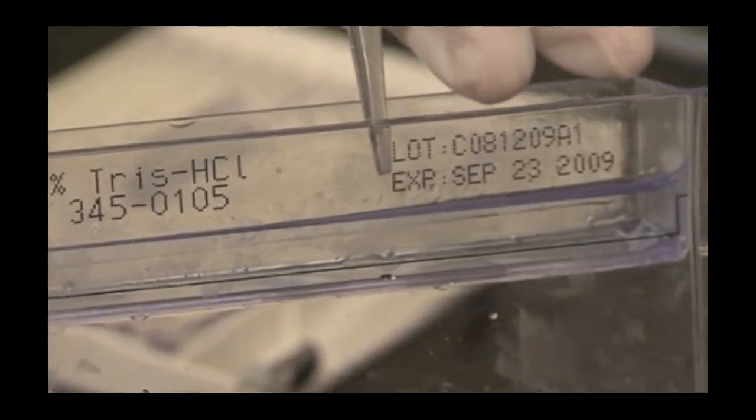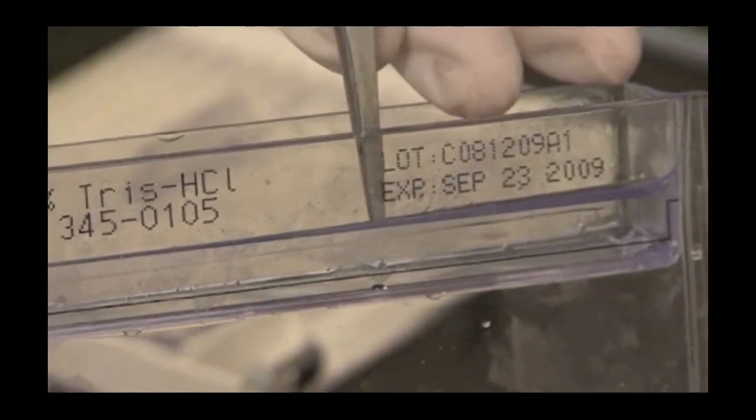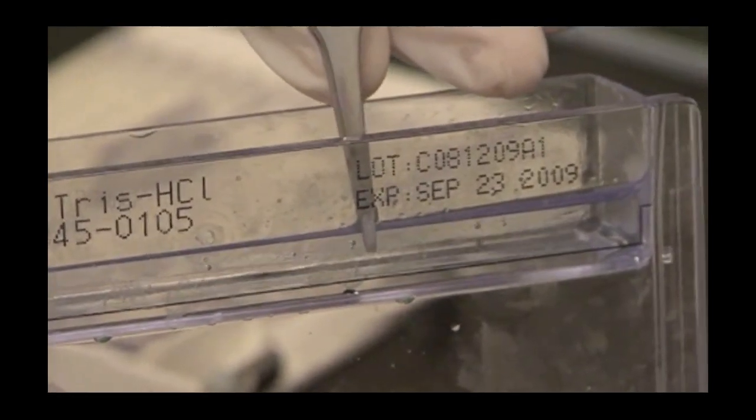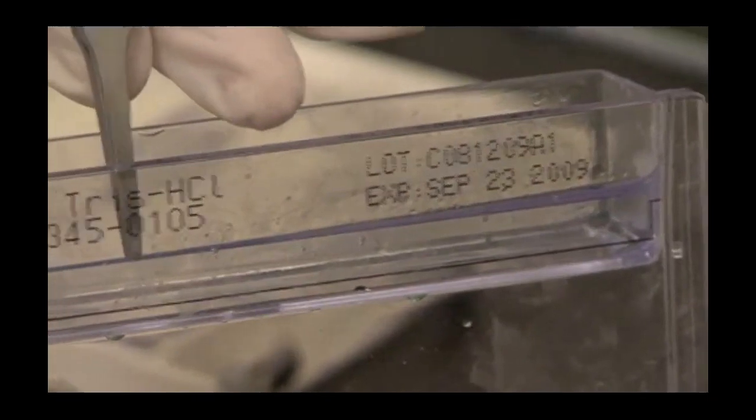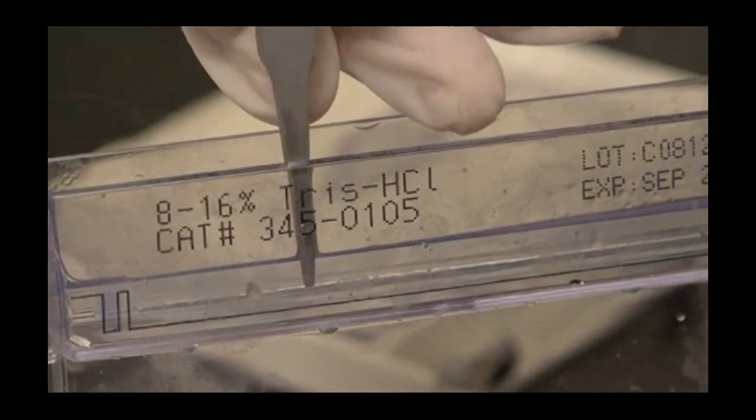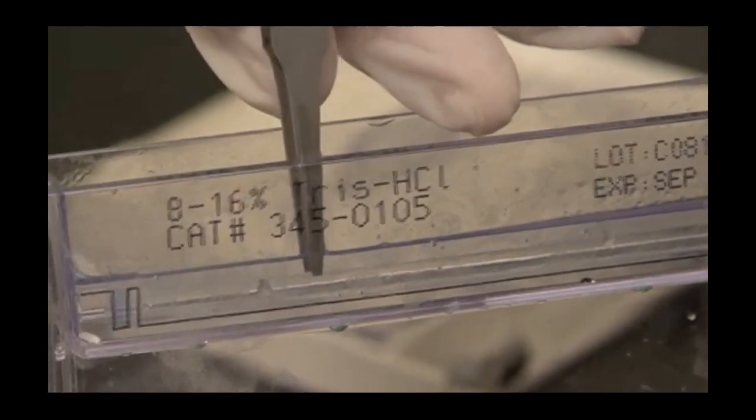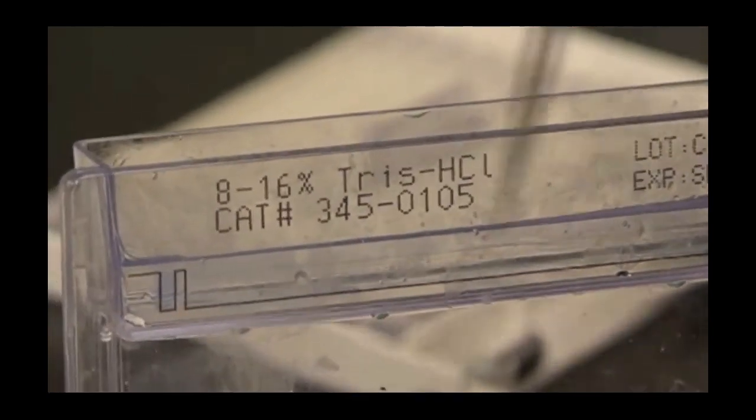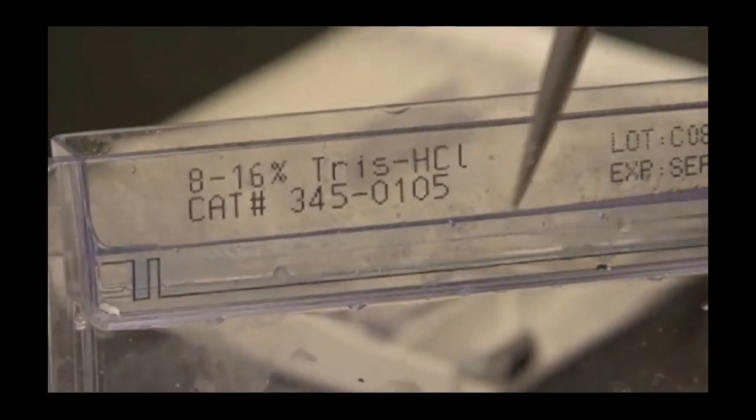Working quickly, use your forceps to push the IPG strip against the gel to push out any air bubbles. Agarose is going to solidify fairly fast. You can see the Agarose filling in the place of the bubbles as they get pushed to the top. Small air bubbles are not an issue. Try to get some of your larger ones, and you should not have any problems for your second dimension gel.